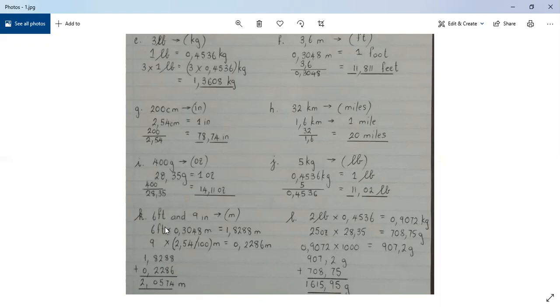Therefore, 6 feet, to convert to meters, you multiply 6 multiplied by 0.3048, which gives you 1.8288 meters.